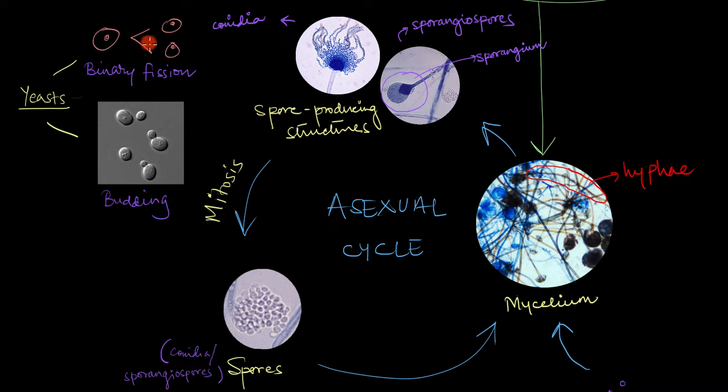In binary fission, a yeast cell splits into two by simple cell division. Meanwhile, in budding, an outgrowth or a bud appears on the yeast cell, which eventually detaches and grows into a new yeast cell. So this bud right here will give rise to a new yeast cell.